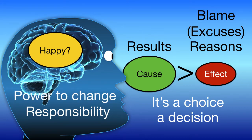If we're blaming somebody else for our unhappiness, or we're blaming the market, or the economy, or the news, or other traders for our losses, then we're at effect and we're giving our power away to those things. When we're at cause, we take responsibility for our results. On the effect side, we give reasons or we make excuses for why things haven't worked out for us.